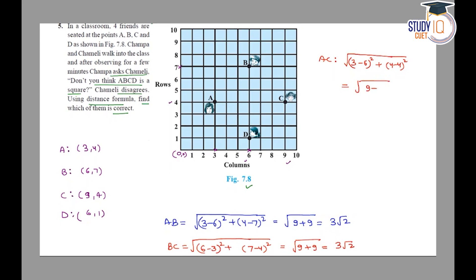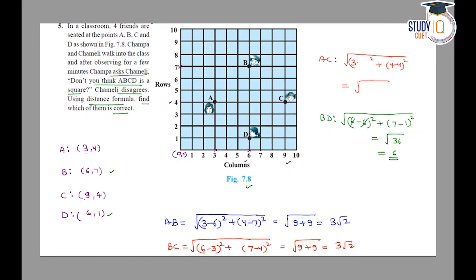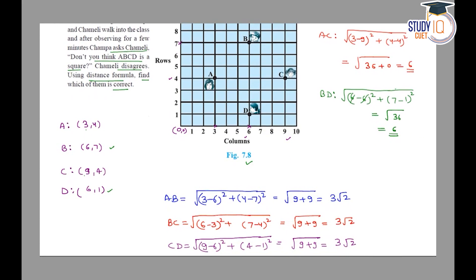AC की length निकालते हैं: AC = √[(3−9)² + (4−4)²] = √[36 + 0] = 6. अब BD की length: BD = √[(6−6)² + (7−1)²] = √[0 + 36] = 6. तो दोनों diagonals की length भी बराबर आ रही है। इसलिए ABCD is a square.